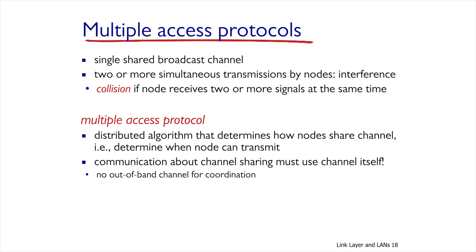Once more than two people are speaking in a room, we can have a collision, and then it would be impossible to understand what people are talking about. To solve this problem, we need a protocol, which we will call Multiple Access Protocol. It will manage the access to that link and will define who sends data and when.